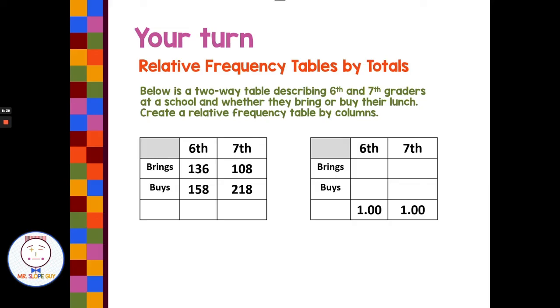All right. So to add up our columns, we notice that the 1.00s are down at the bottom of the columns, meaning we're comparing everything to the total for the column. So I need to add up my sixth graders to get 294 sixth graders. Add up my seventh graders to get 326. And then for this column, I'm going to divide 136 by 294 to get my relative frequency at 0.46 and 158 divided by 294 to get my relative frequency for buys at 0.54. Over here, I'm going to divide 108 divided by 326 and 218 divided by 326 to get my relative frequency.